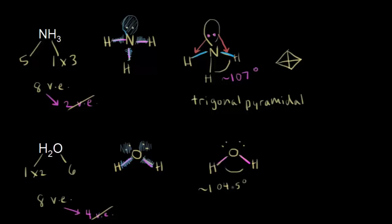In terms of the geometry of the molecule, the electron clouds are attempting to be in a tetrahedral fashion, but the geometry of the molecule is different because you ignore lone pairs of electrons. When you look at the shape — ignoring lone pairs — it looks like that. We've seen that shape before: it's bent or angular. So we say that the geometry of the water molecule is bent or angular with an approximately 104.5 degree bond angle. Those are a couple of examples of four electron clouds and how to figure out the geometry while also thinking about the bond angles.